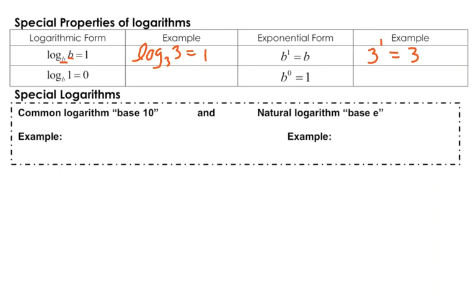Log base b of 1 is equal to 0. We'll throw some numbers in there. Log base 7 of 1 is equal to 0. Why does that work? If we change it to the base, the power is 0. Anything to the 0 power is 1. So pretty much if you ever have a 1 right there, you're going to get an answer of 0.